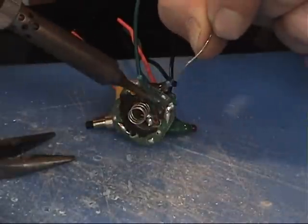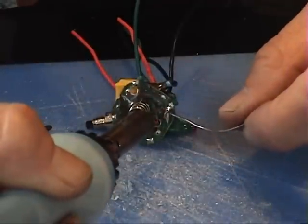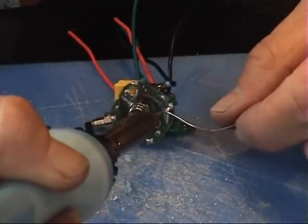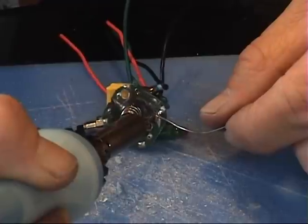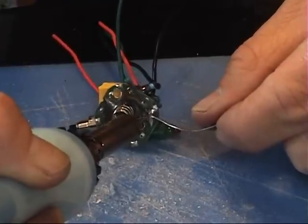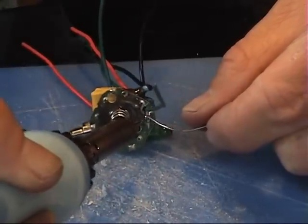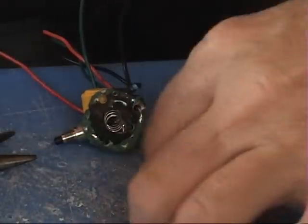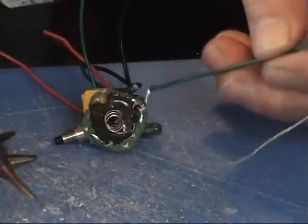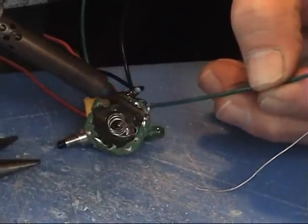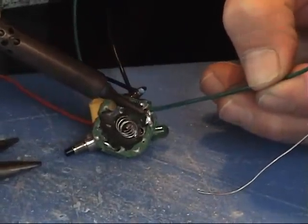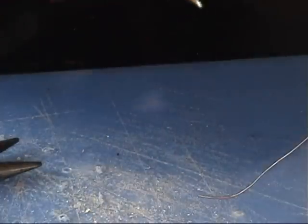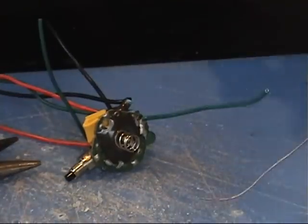I use a lighter to strip the wires because at this point they get so short it's impossible to use that wire stripper I showed you earlier. So I just melt the plastic off that way. There you go, ground connection secured.